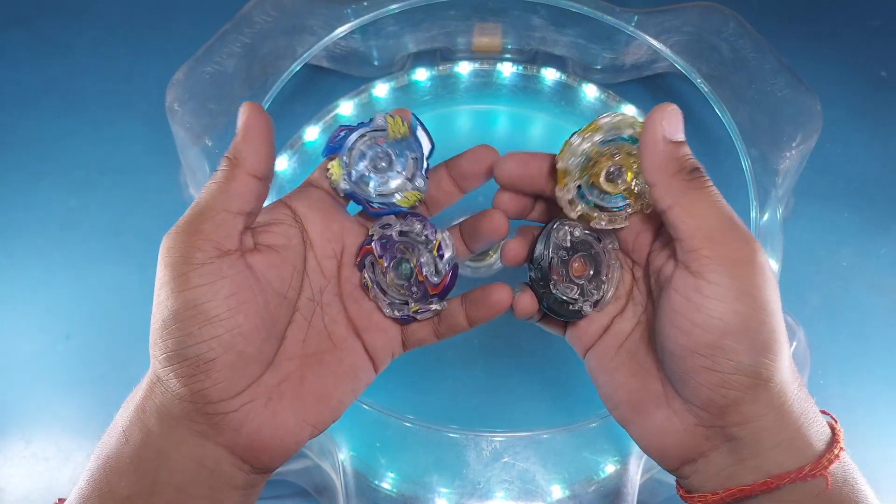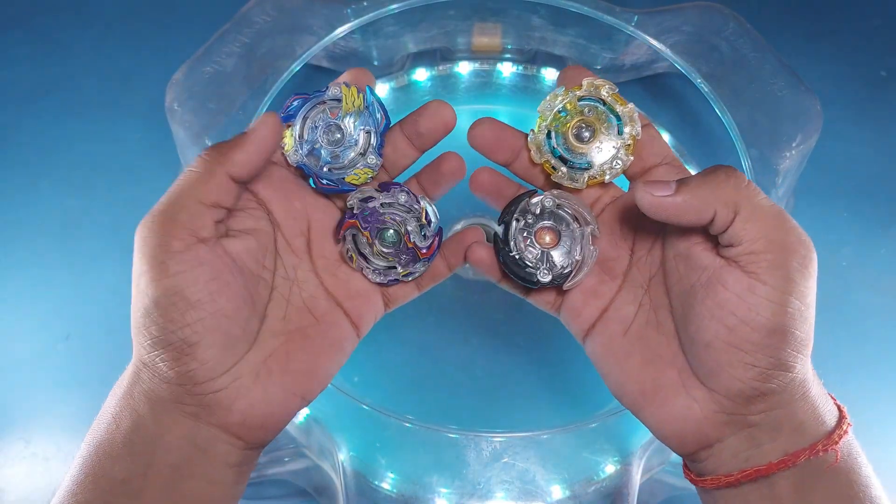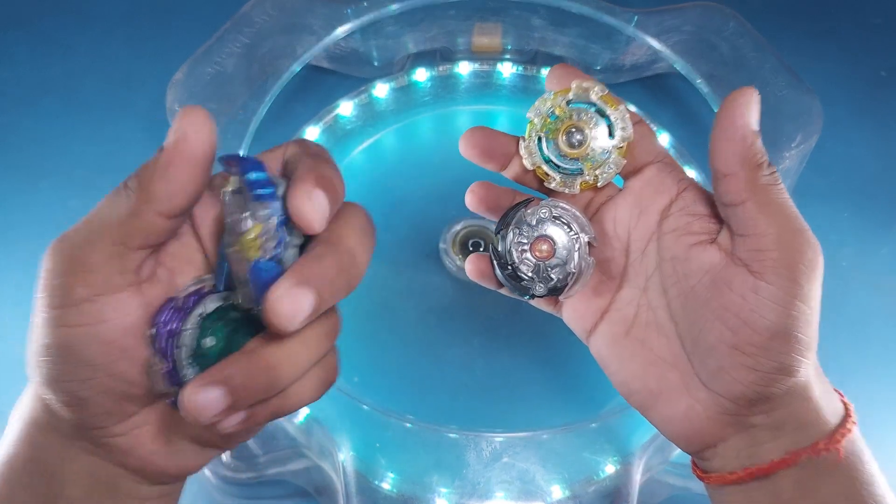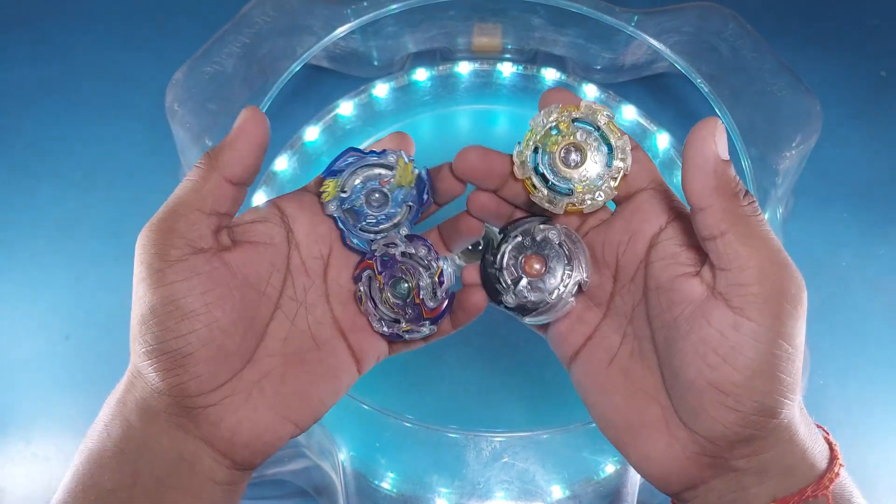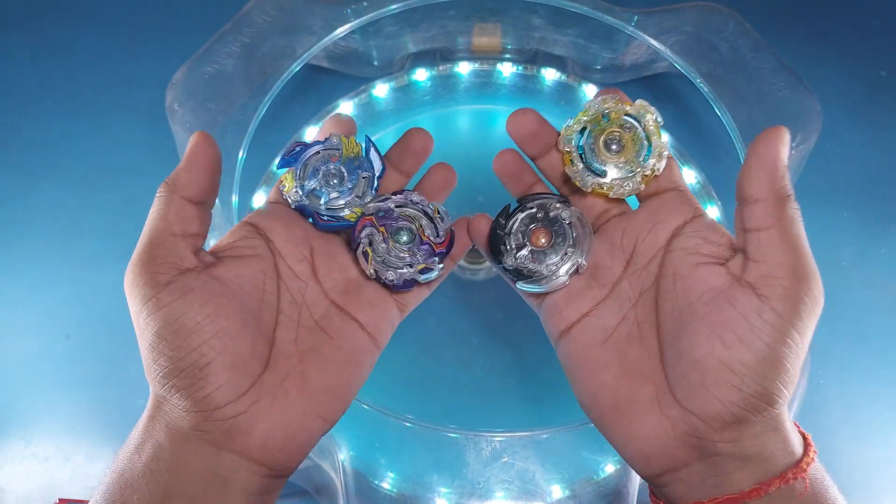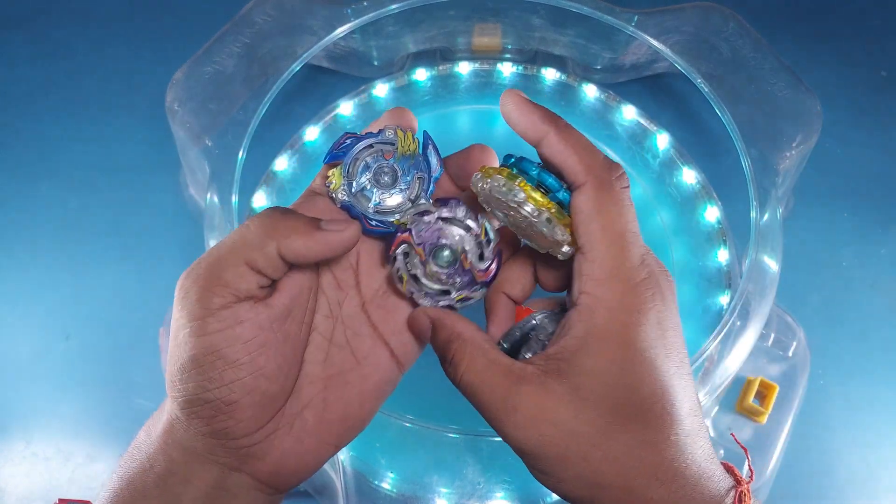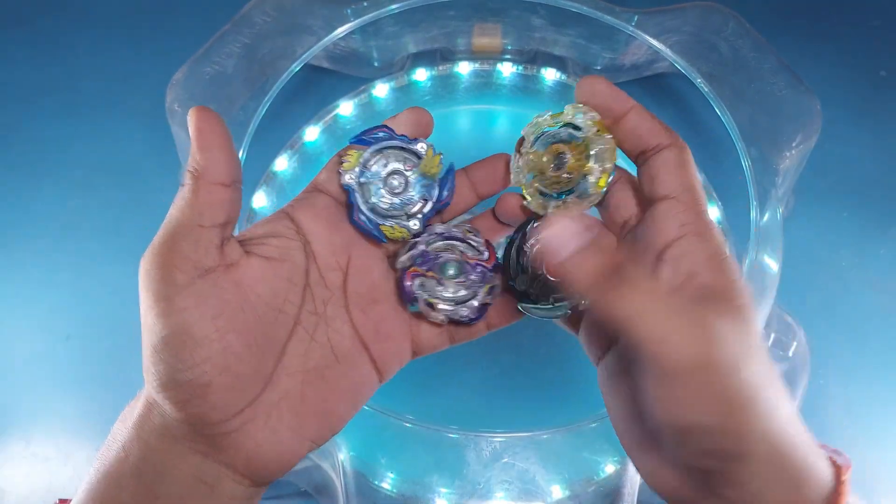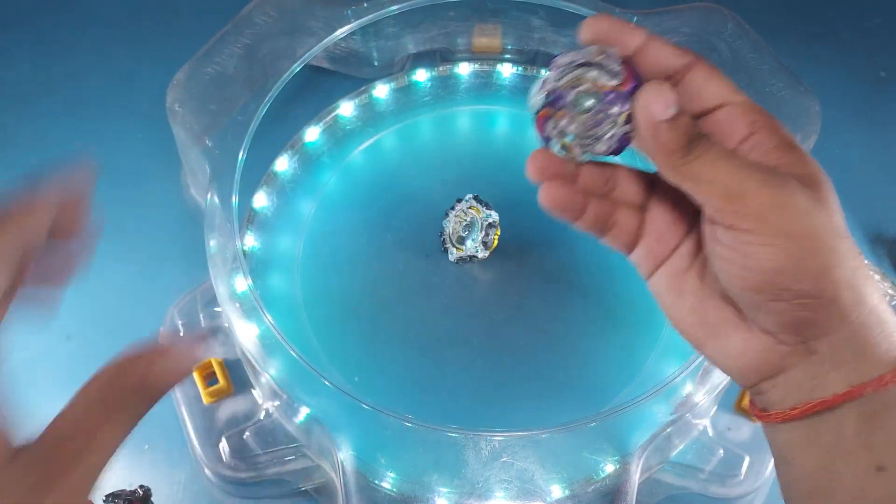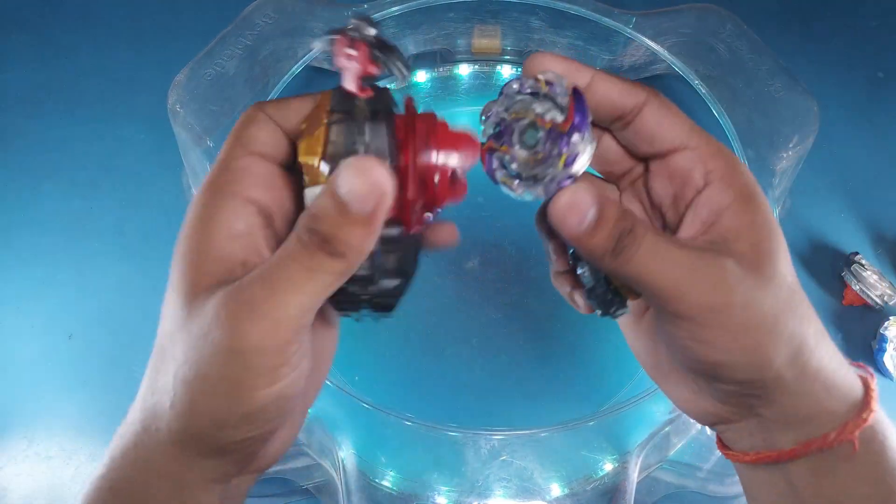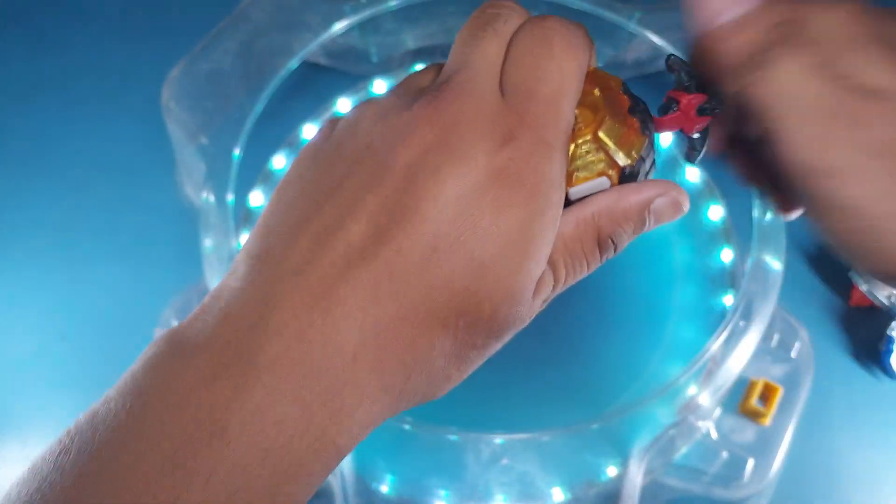For battle we got four Beys here: Wild Wyvern, Victory Valkyrie, Kaiser Kerbeus, and Dark Deathscythe. These were like four blade breakers of the Burst series. First battle, let's do with Wild Wyvern. Let it rip!